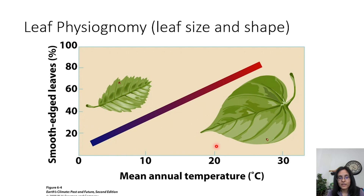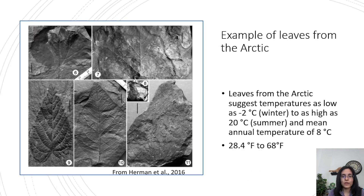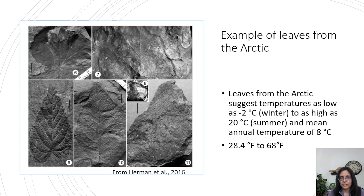Paleoclimatologists and paleobotanists have found leaf fossils in the Arctic and Antarctic. These Arctic leaf fossils were measured, and using graphs or more complex mathematical formulas, scientists determined that wintertime temperatures in the Cretaceous Arctic could have been as low as minus 2 degrees Celsius, while summer temperatures reached about 20 degrees Celsius, with a mean annual average of 8 degrees Celsius — that's 28.4 to a high of 68 degrees Fahrenheit.